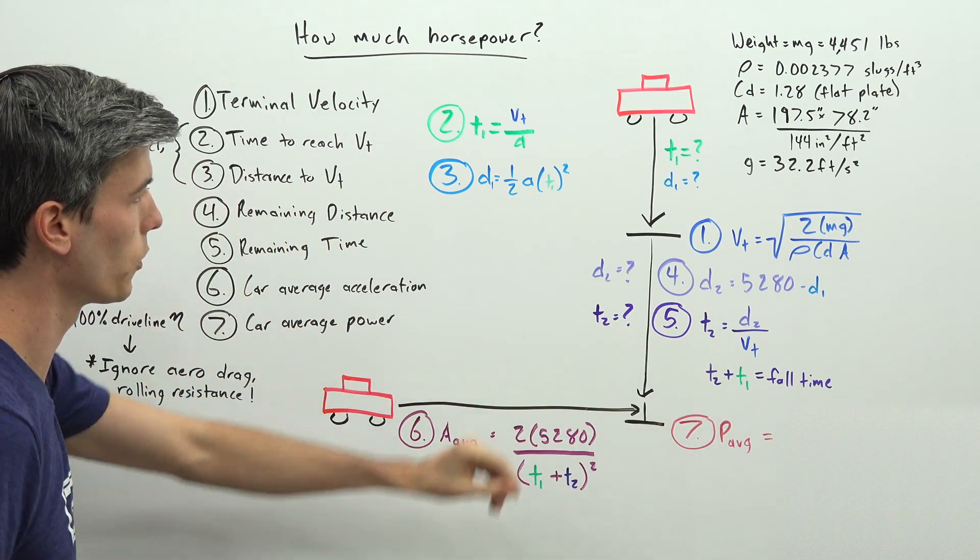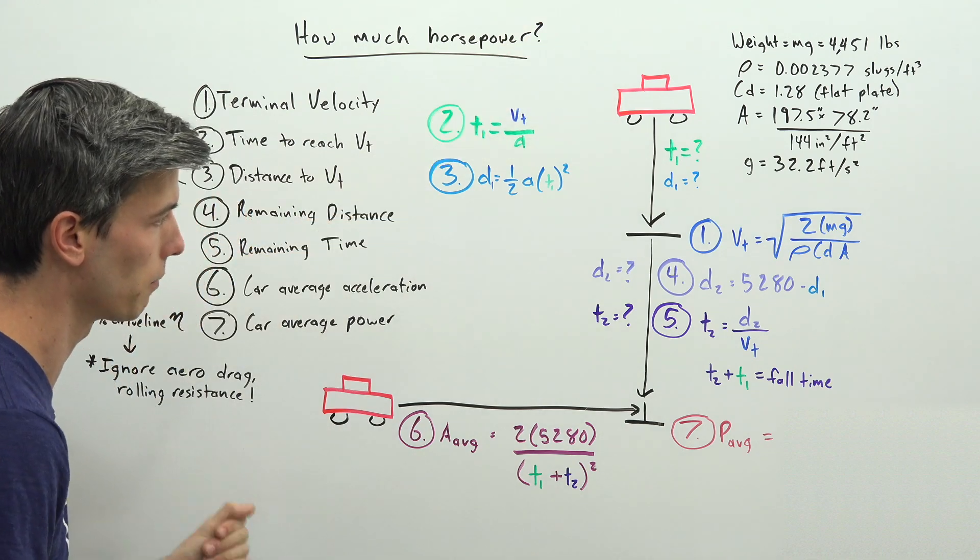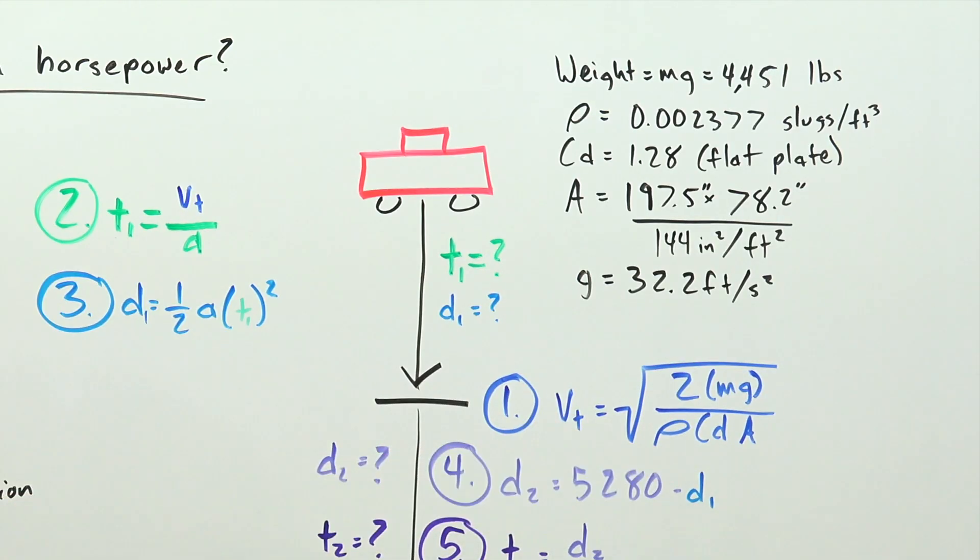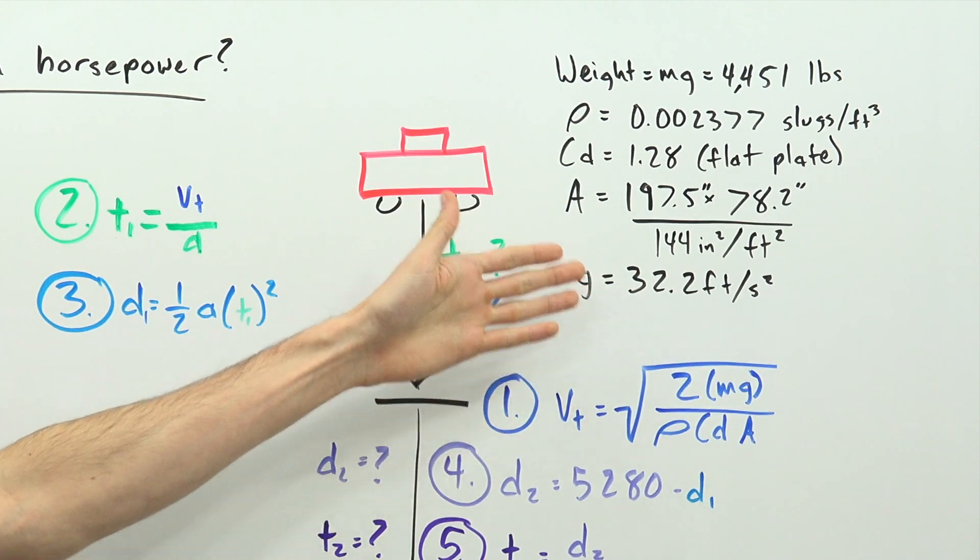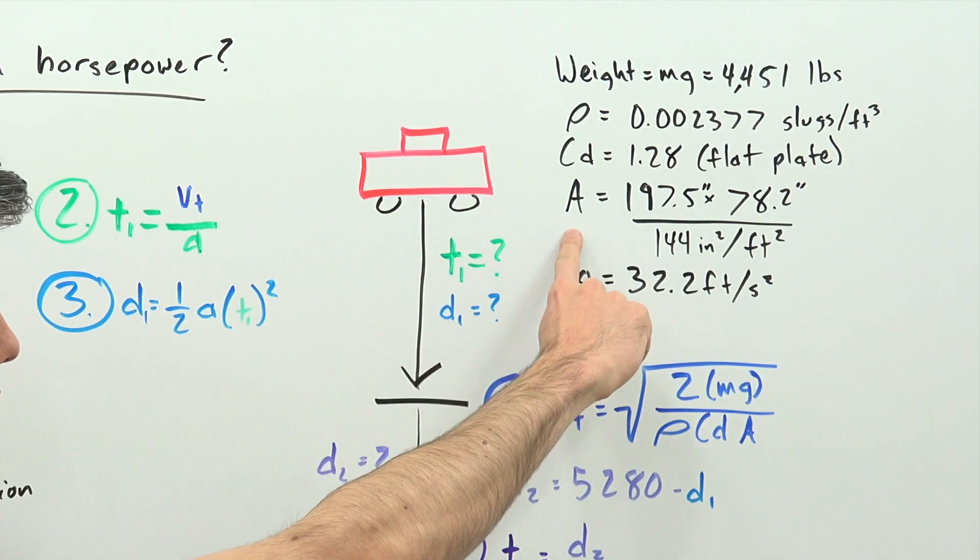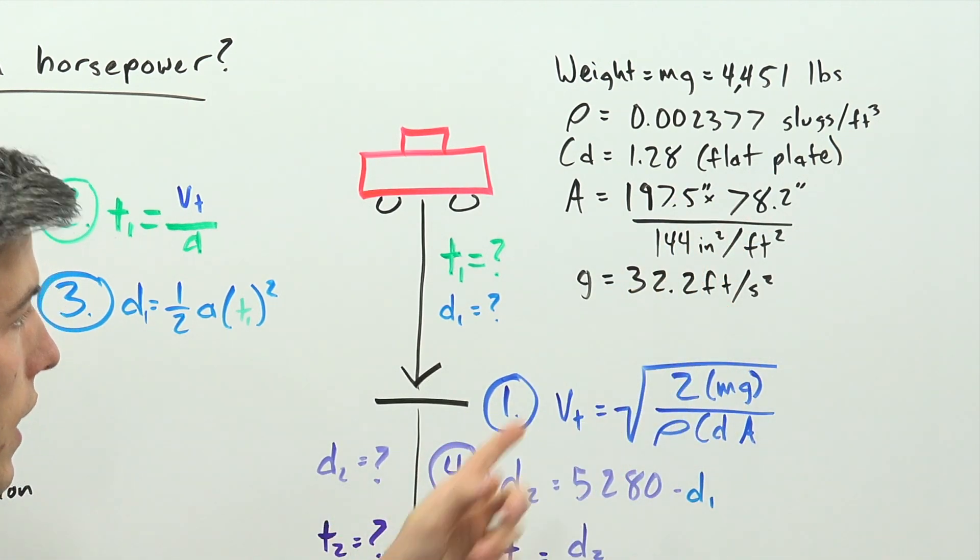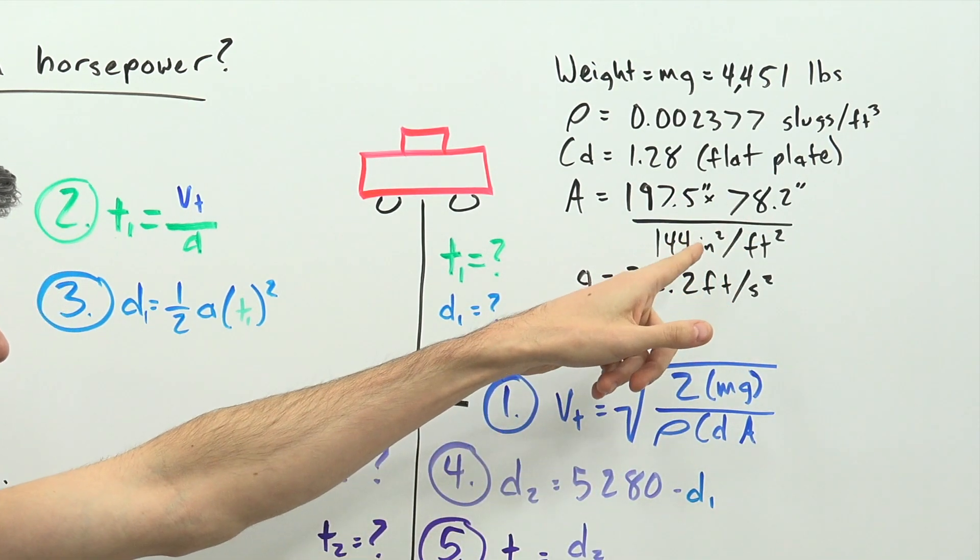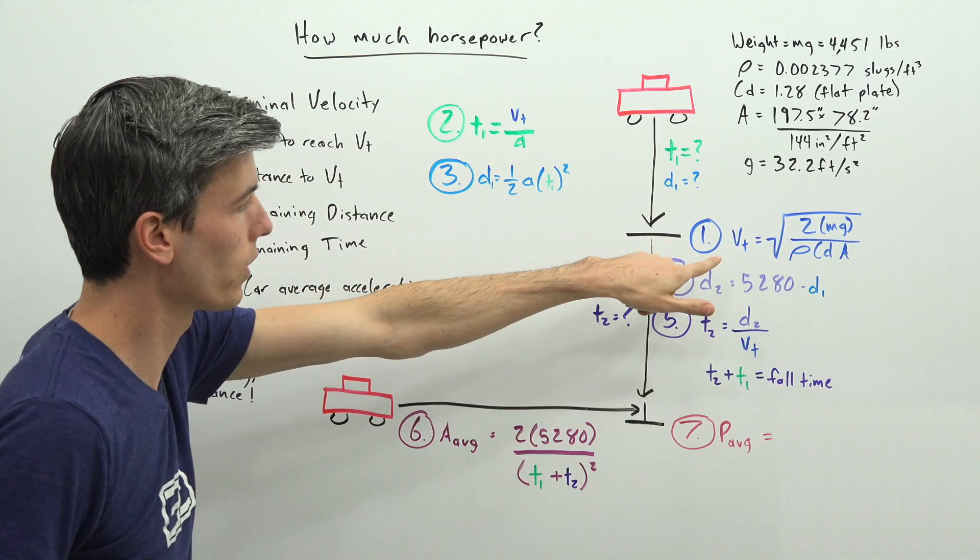And so the first thing we need to do is figure out what will this car's terminal velocity be. So we have our equation for terminal velocity and Dodge provided us with all of the variables. The only one you have to do a little bit of math on is the area. So you multiply the length by the width and then you're going to divide that by 144 to get that area into feet squared.